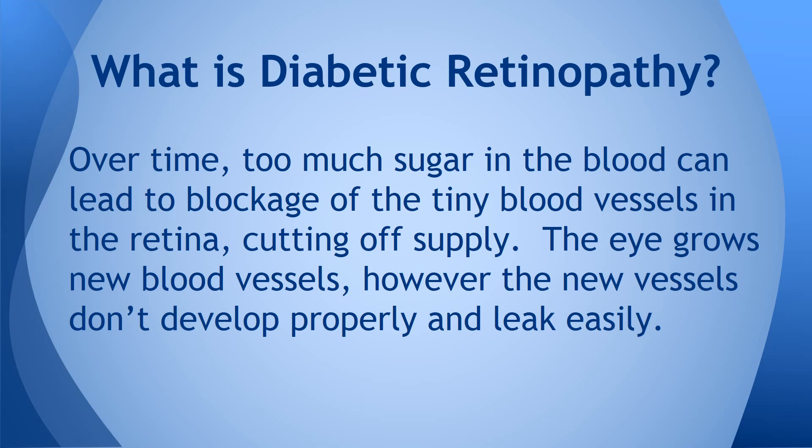In general, over time, too much sugar in the blood can lead to blockage — this is the diabetic portion. What can happen is the tiny blood vessels in the retina cut off supply. When it gets more severe, the eye will grow new blood vessels, and those are the ones more likely to burst and rupture, allowing blood to leak and impairing vision.